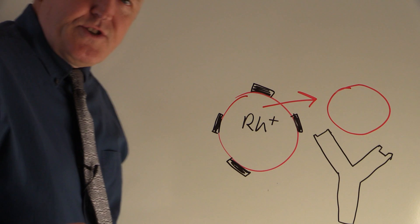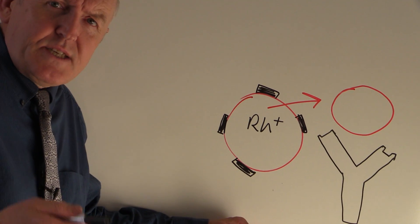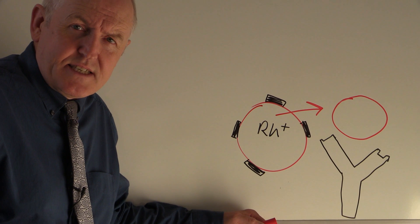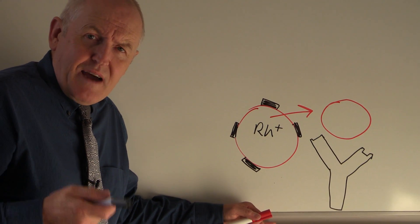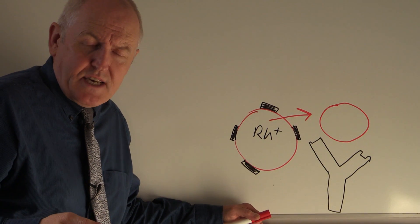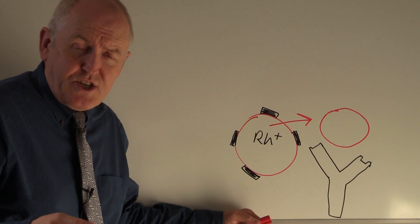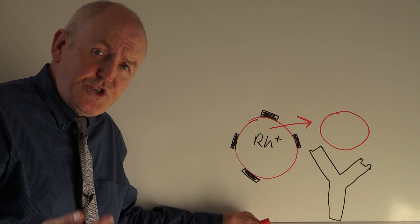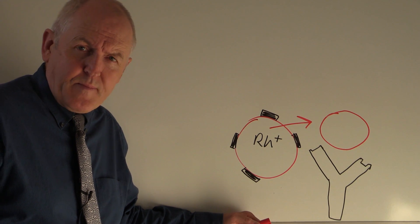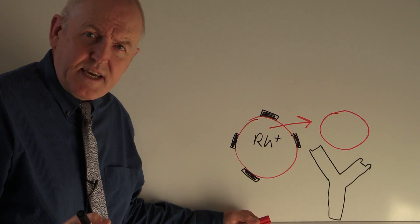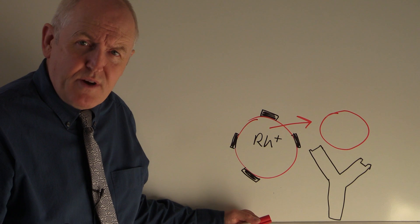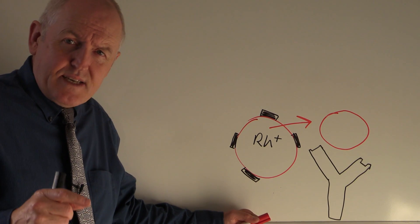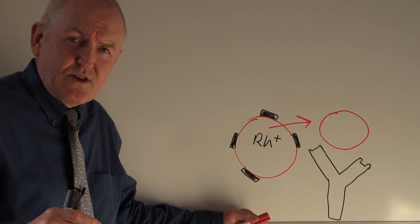Now let's think about the situation where there's a Rhesus positive father and a Rhesus negative mother. That means there is a 50% or 100% chance of the fetus being Rhesus positive depending on the genotype of the father. Whenever there's a Rhesus negative mother and a Rhesus positive father, this is a potential complication — hemolytic disease of the newborn.